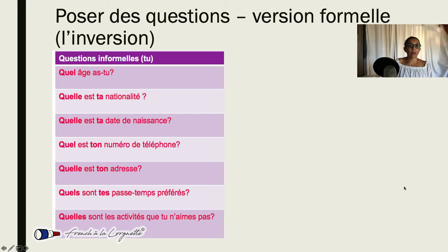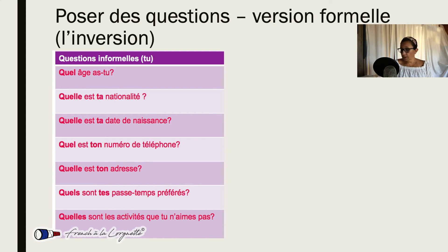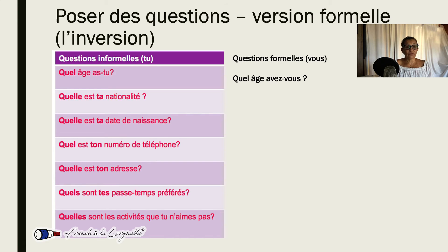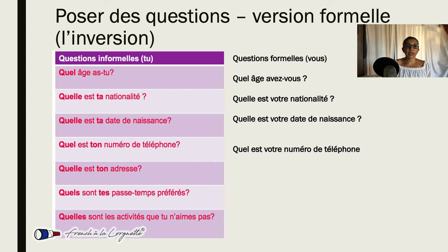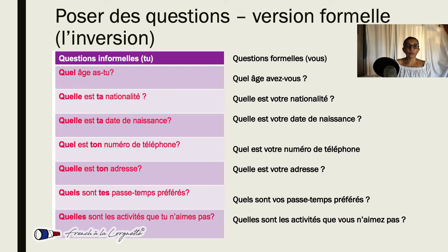Let's look at how we transform these questions, which are very informal because we use the tu form, and now we will use the vous form. Let's transform them as a practice: Quel âge avez-vous? Quelle est votre nationalité? Quelle est votre date de naissance? Quel est votre numéro? Quelle est votre adresse? Quels sont vos passe-temps? Quelles sont les activités que vous n'aimez pas?